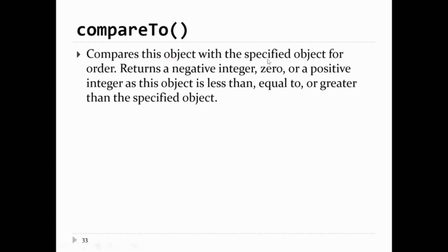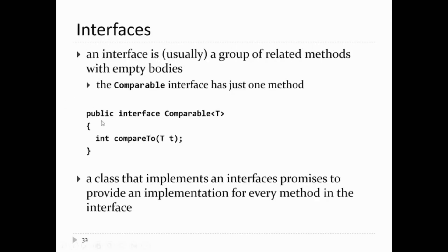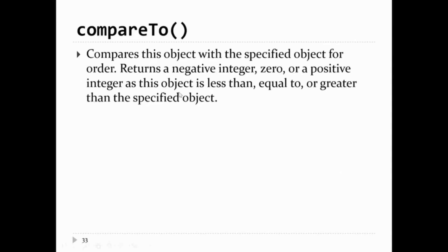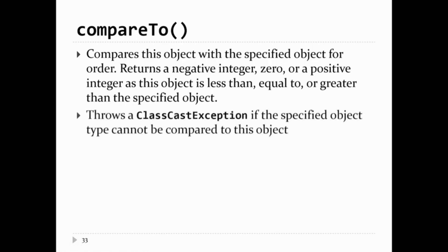So what does compareTo do? This is copied directly from its documentation. compareTo compares this object with the specified object for order — so in other words, it's x.compareTo(y). It returns a negative integer, zero, or positive as this object is less than, equal to, or greater than the other object. So if x is less than y, then x.compareTo(y) returns a negative value. If x is greater than y, then x.compareTo(y) returns a positive value. If they're equal, compareTo returns zero. compareTo throws an exception if you pass in an object that you can't compare to the object used to call the method.